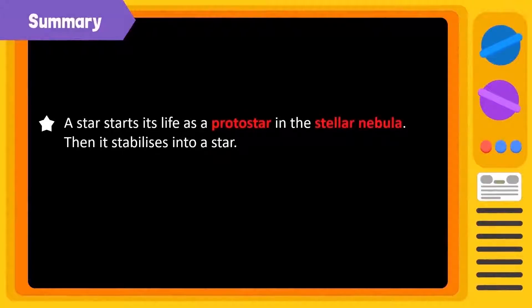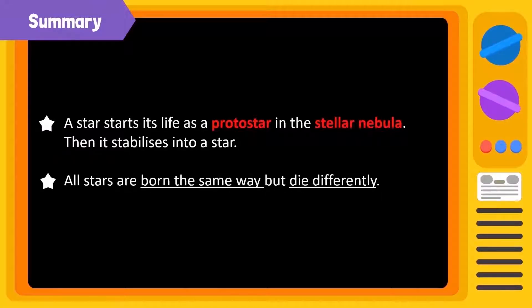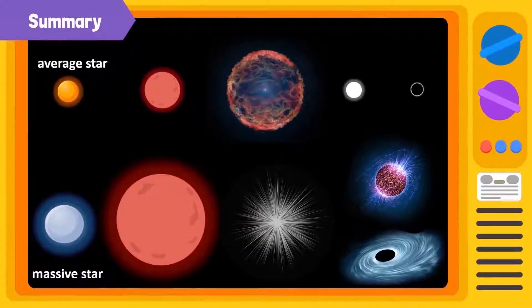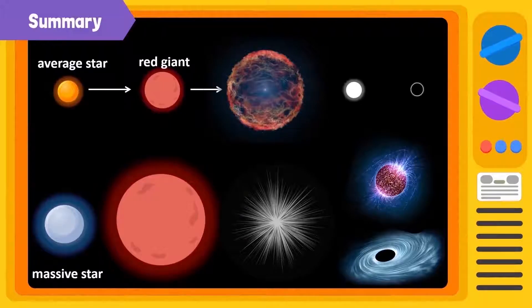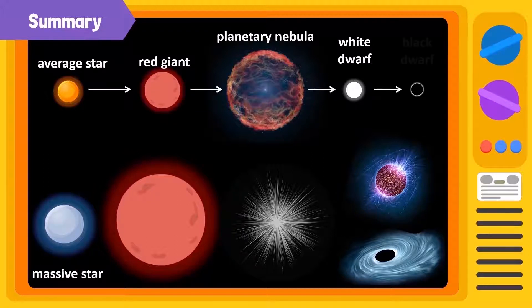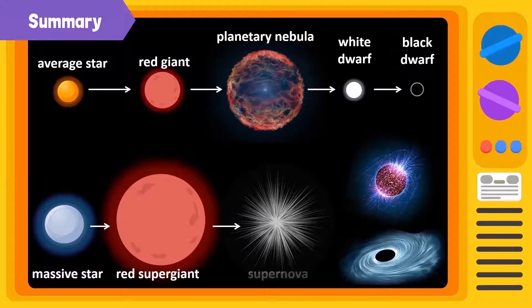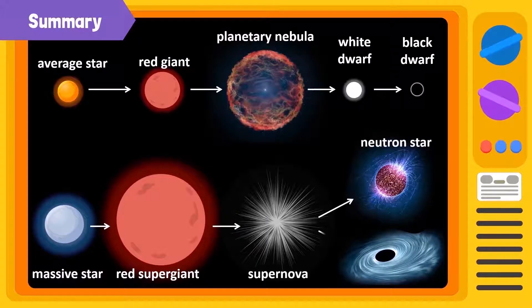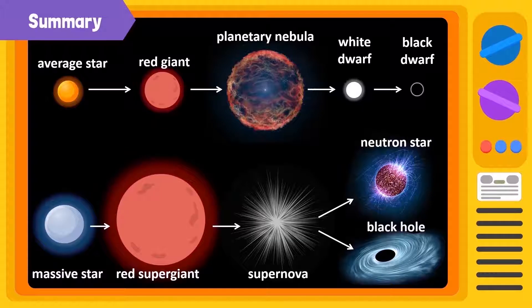A star starts its life as a protostar in the stellar nebula. Then, it stabilizes into a star. All stars are born the same way, but die differently. After exhausting its energy, an average-sized star becomes a red giant, then a white dwarf, and then dies as a black dwarf. A massive star has a different journey. After exhausting its energy, the massive star becomes a red supergiant. After a tremendous supernova explosion, the star can either end up as a neutron star or as a black hole.